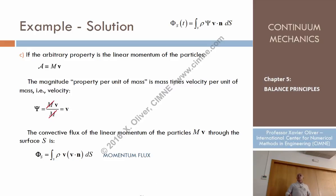So look at the result: rho is a scalar, B·n is a scalar, but phi (the velocity) is a vector. This is a case in which the entity we are dealing with is a vector, so the flux is not a scalar anymore — it is a vector.